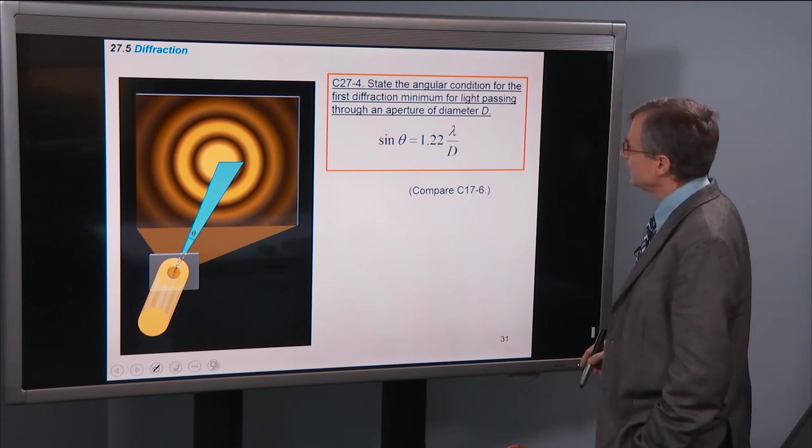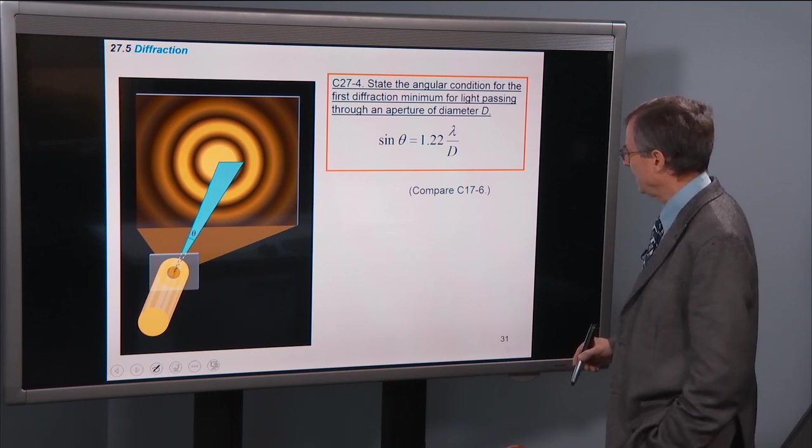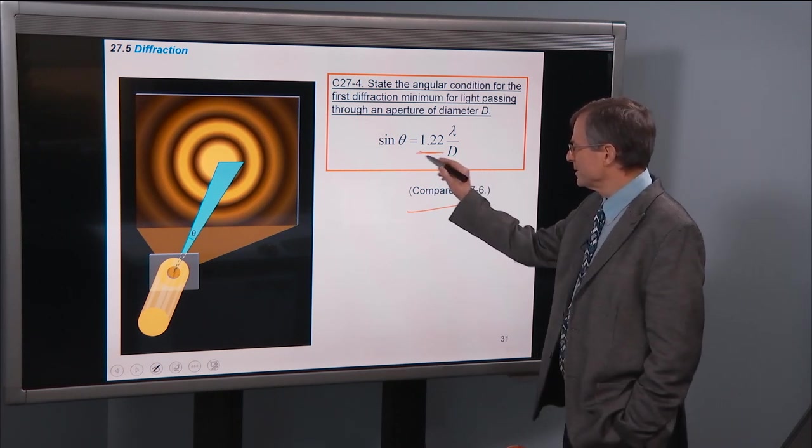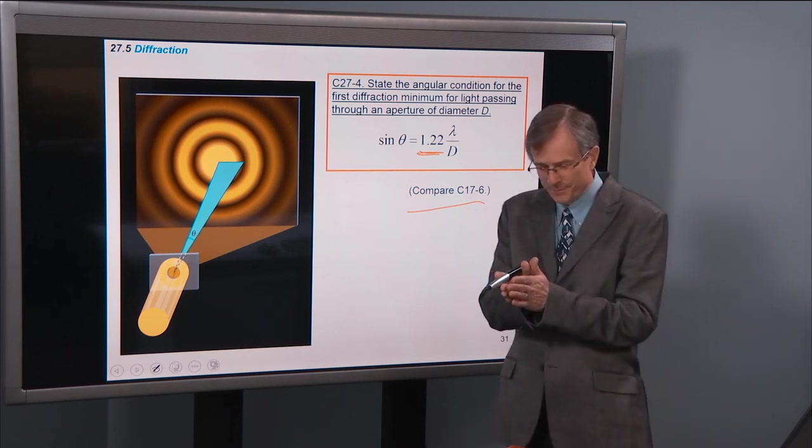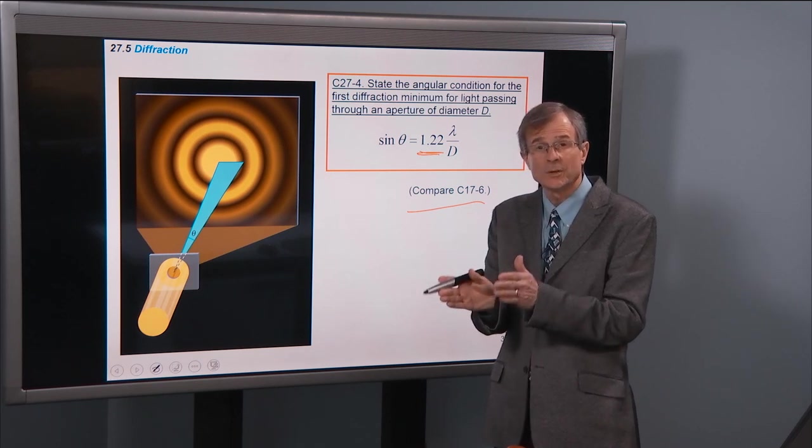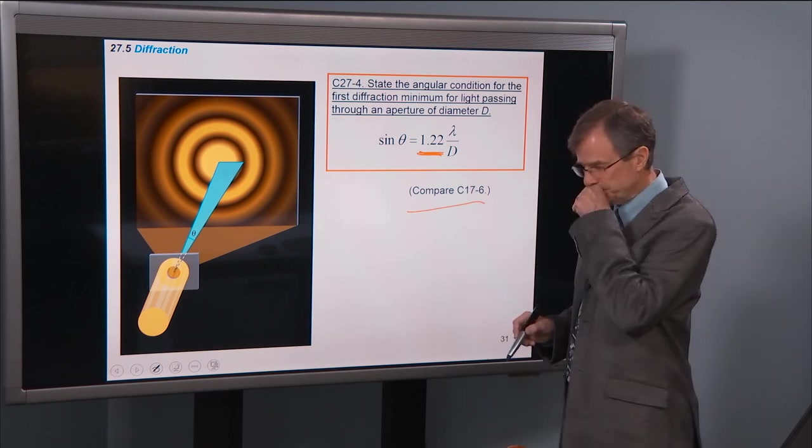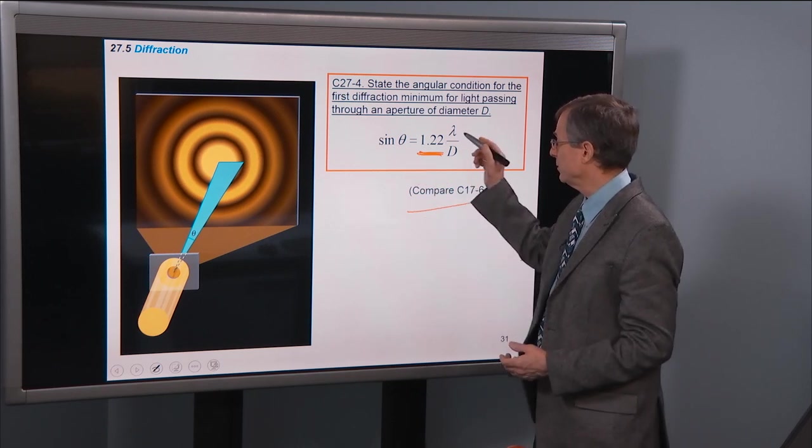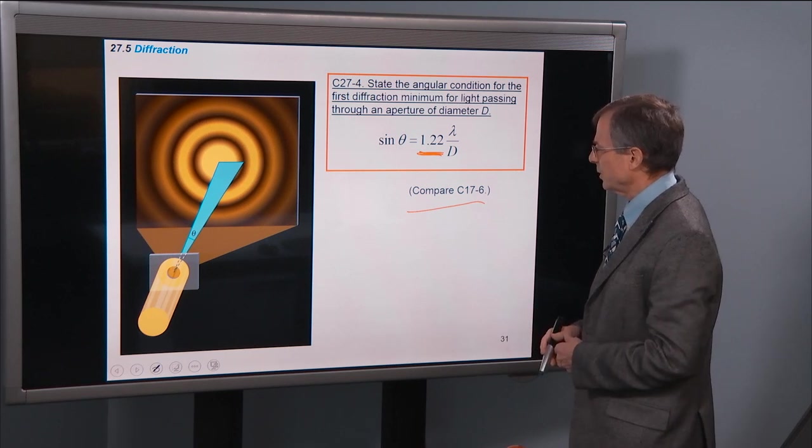All right. Concept 4. State the angular condition for the first diffraction minimum for light passing through an aperture of diameter D. Compare again with Concept 17-6. You remember this number. It's 1.22. And we talked about that first diffraction minimum for sound going through a circular aperture. And for a circular aperture, we had a 1.22. For just a slit, a long narrow slit, we just had one here. So sine theta was lambda over D. That's exactly the same as it was before.